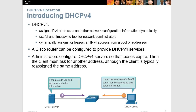DHCP leases do expire, typically anywhere from 24 hours to a week. If the client still needs the address, it will ask again and most of the time be given that same address. You can set the lease time shorter for certain stations — for example, a classroom where students bring devices in and out might use 3 hours, while teachers' computers might be set for 24 hours or a week since they have a set workstation.